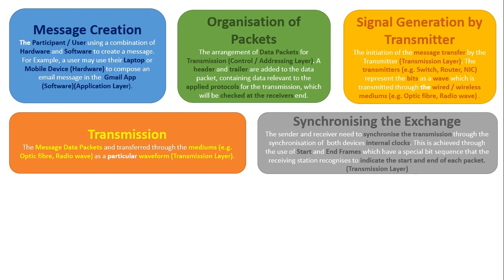Once transmission is established, the exchange between the transmitter and the receiver has to be synchronized. This is probably one of the more complex stages. The sender and receiver need to synchronize transmission through the synchronization of both devices' internal clocks. This is achieved through the use of start and end frames, which have a special bit sequence that the receiving station recognizes to indicate the start and end of each packet. A start frame tells the receiver this is a new packet, and an end frame signals the end of that packet, helping synchronize the clocks on both ends so packets are sent at a consistent rate and errors are prevented.